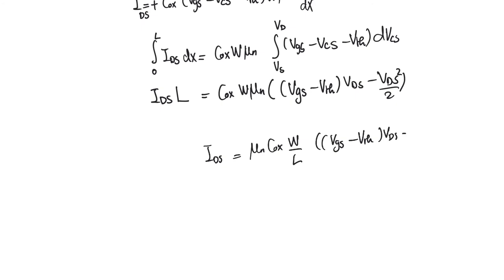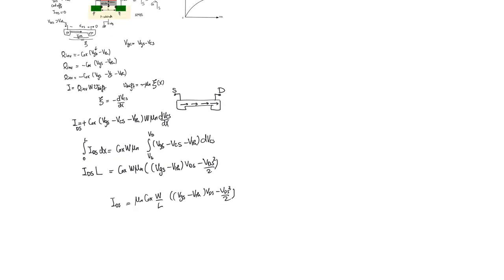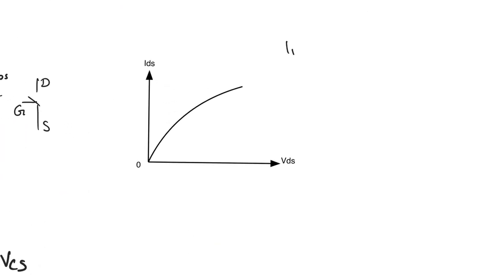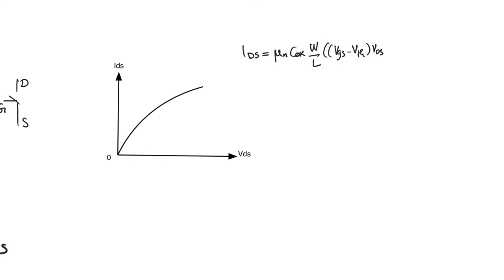Plotting this current-voltage equation gives a parabola. The current equation is IDS = μ_n·C_oxide·(W/L)·[(VGS − V_threshold)·VDS − VDS²/2]. Without the VDS²/2 term we would have a linear I-V relationship, corresponding to a constant resistance between drain and source. The VDS²/2 term introduces non-linearity. This mode of operation is called the ohmic mode, also known as the triode mode or resistive mode.